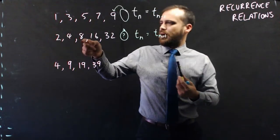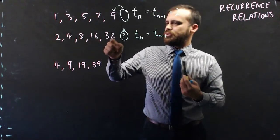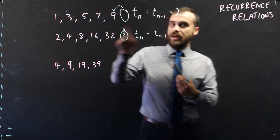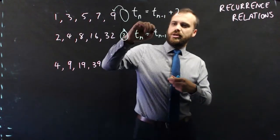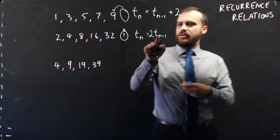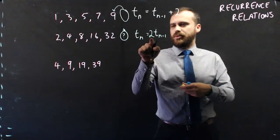2, 4, 8, 16, 32. Well, I need to take this number and double it. So in other words, I need to multiply the previous term by 2.